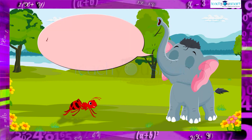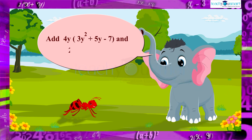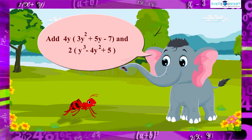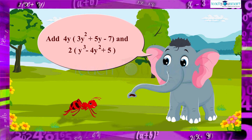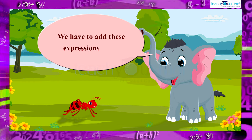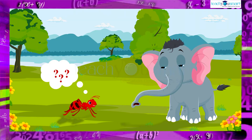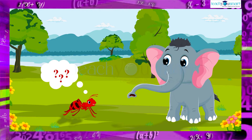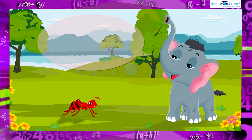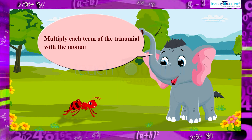Add 4y multiplied by 3y squared plus 5y minus 7, and 2 multiplied by y cubed minus 4y squared plus 5. We have to add these two expressions. We can simply multiply each term of the trinomial with the monomial and add them.